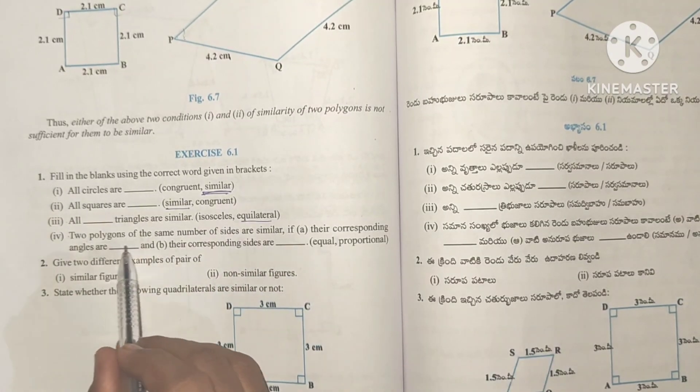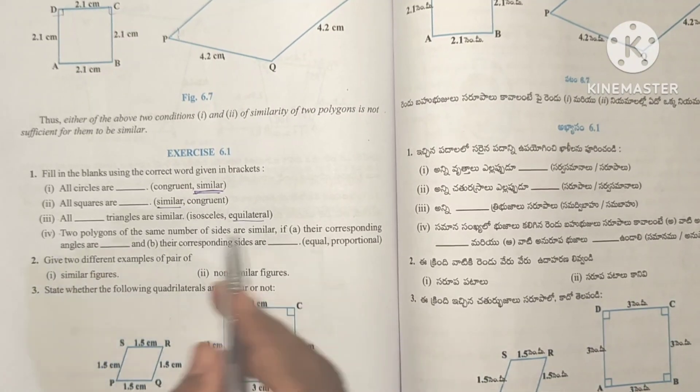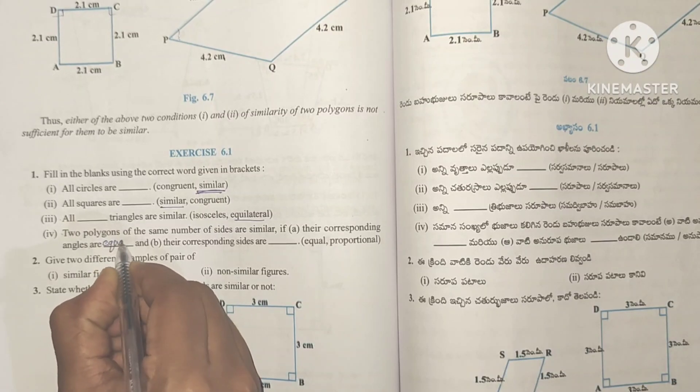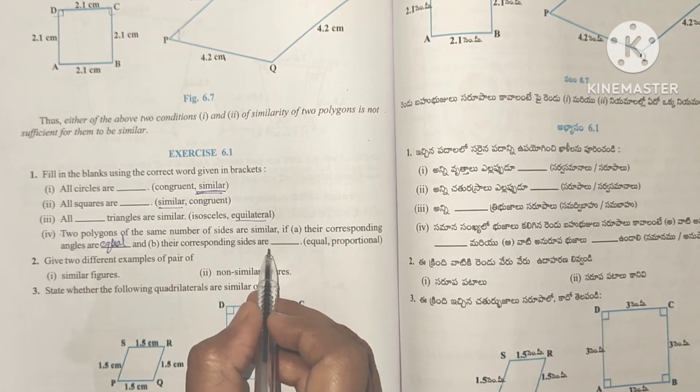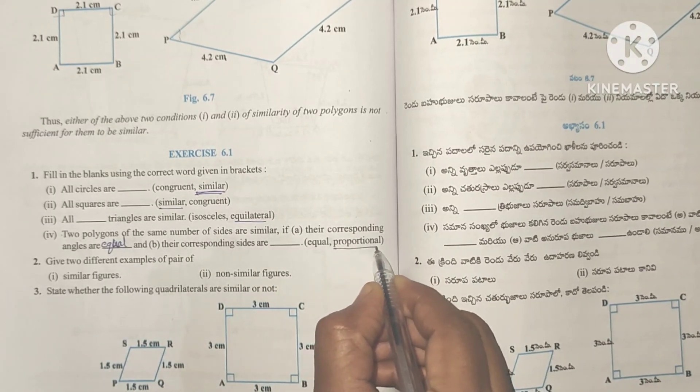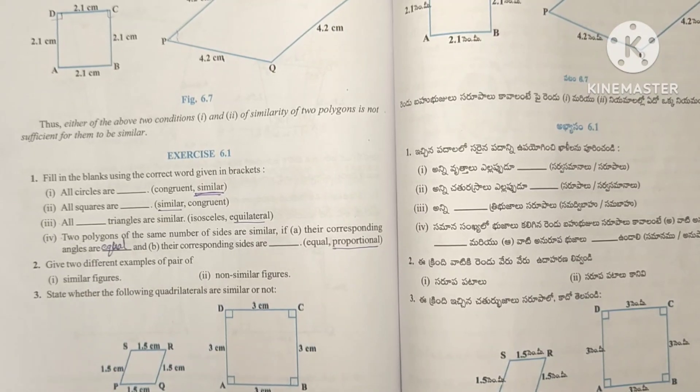Two polygons of the same number of sides are similar if the corresponding angles are equal - the corresponding angles must be equal students - and the corresponding sides are in the same ratio. That means proportional. Same ratio means proportional, okay.